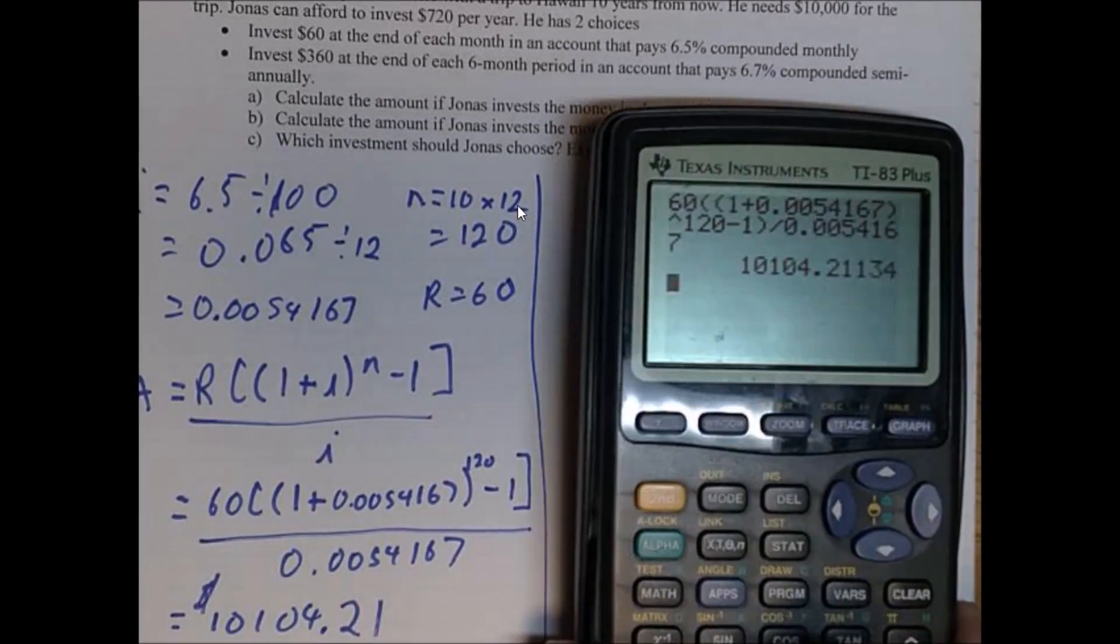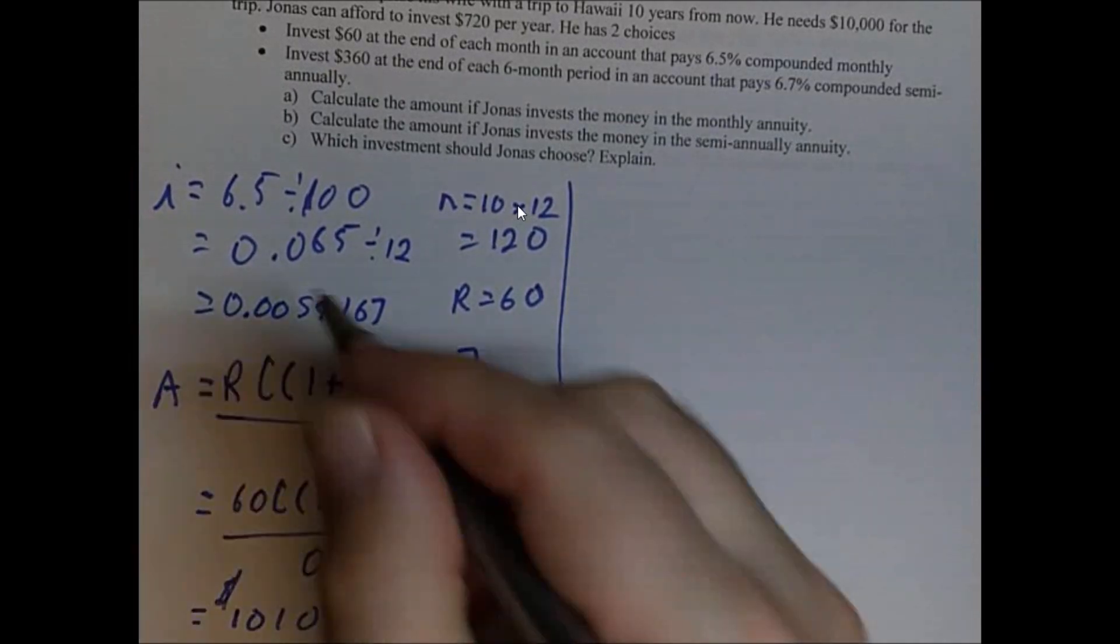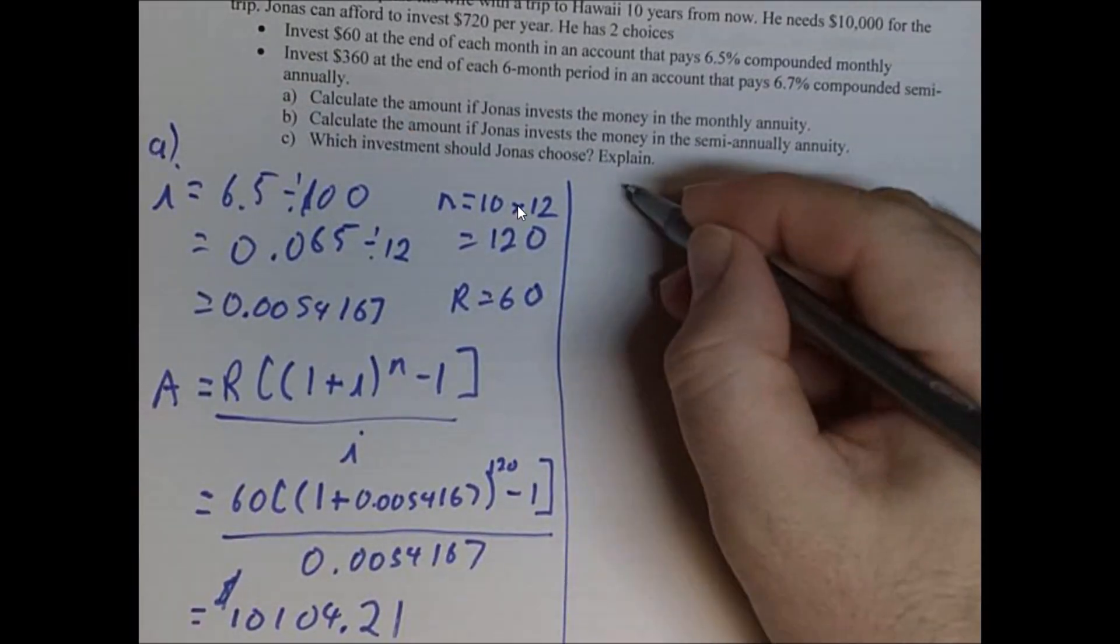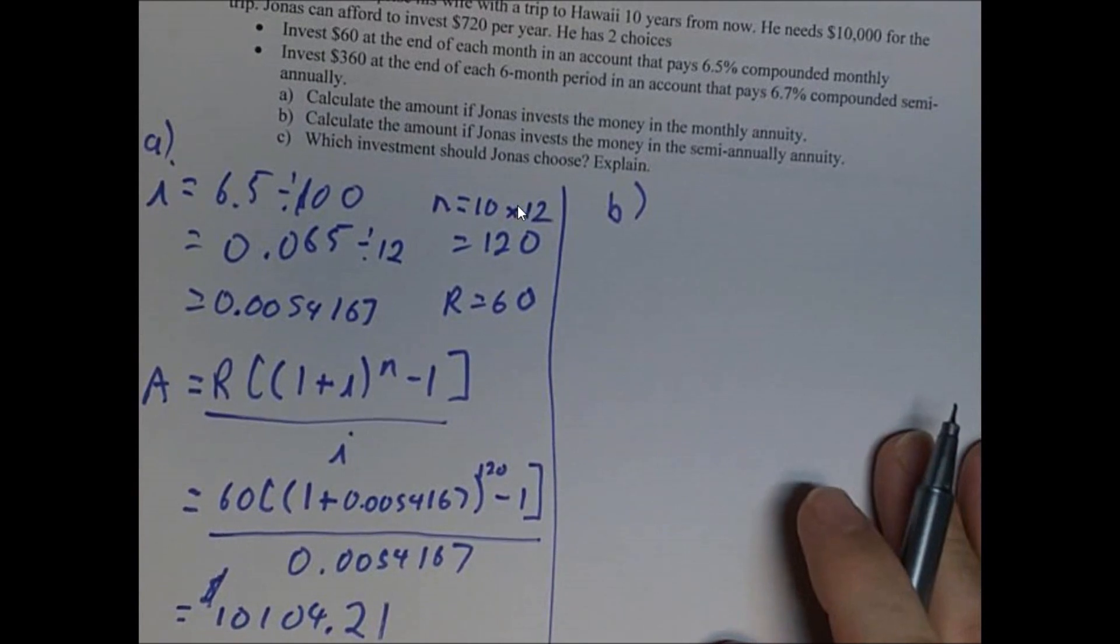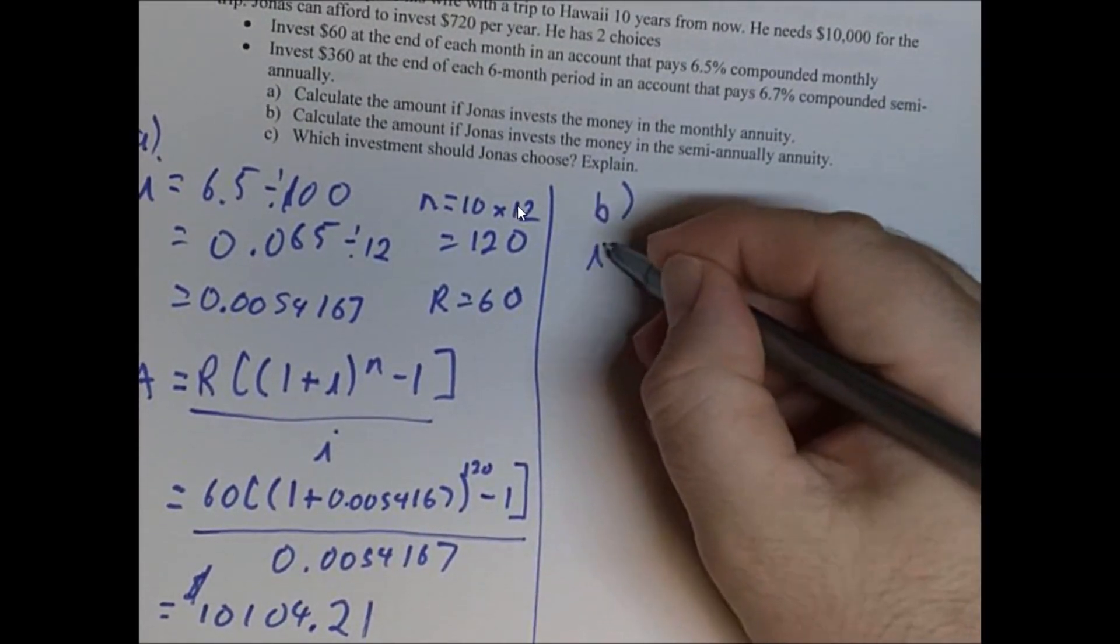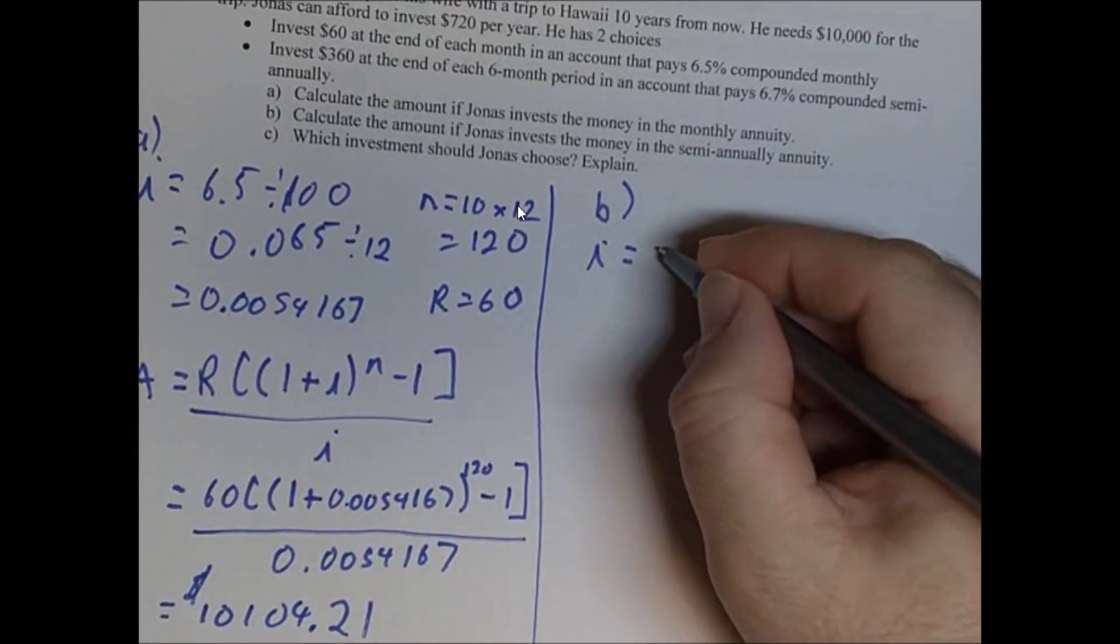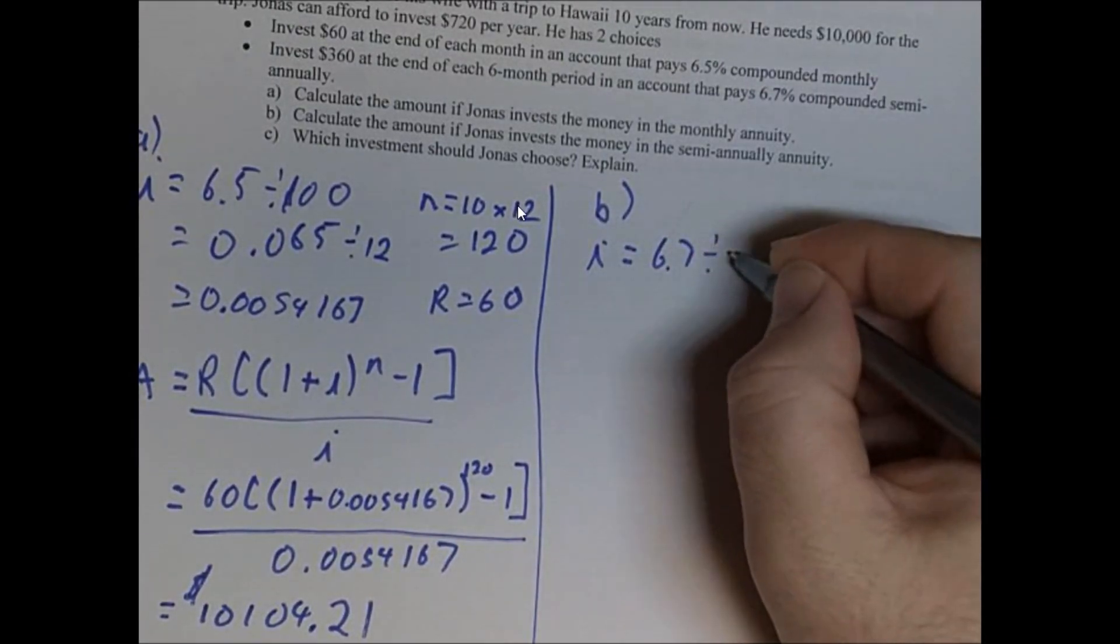Let's look at investment number two. So all that was for A part. That was investment one. It was A. And over on this side of the column, we're going to do investment two. And we're going to compare the two. So now I, start off the same way. I is 6.7% this time. So 6.7 divided by 100.